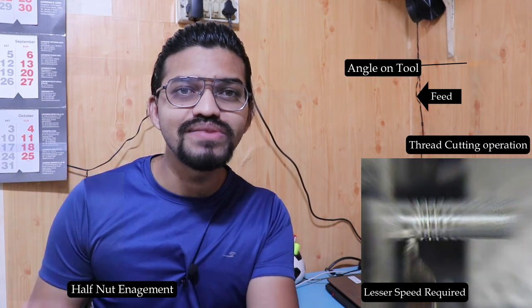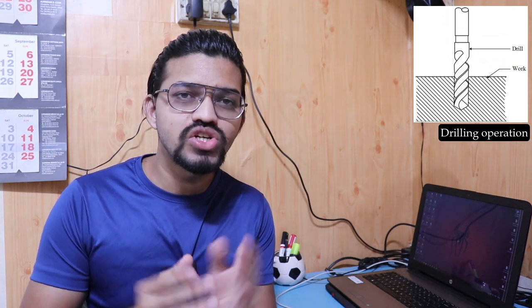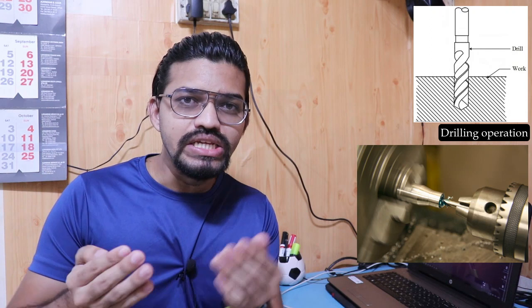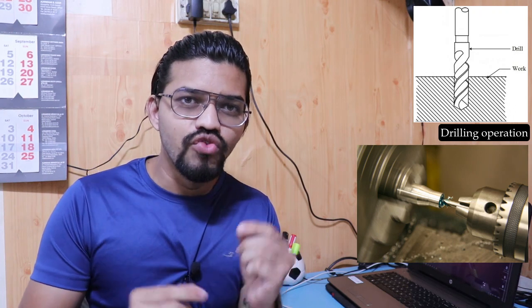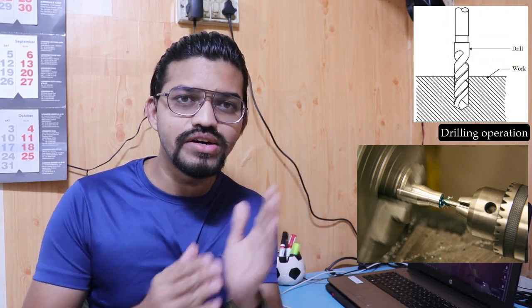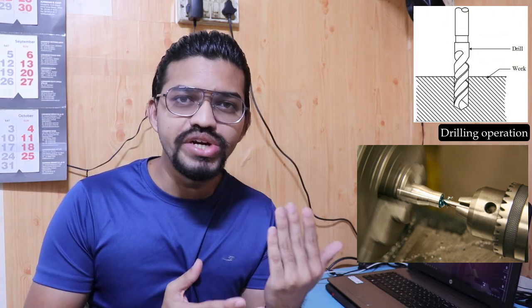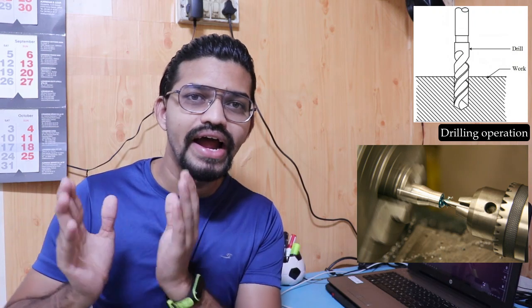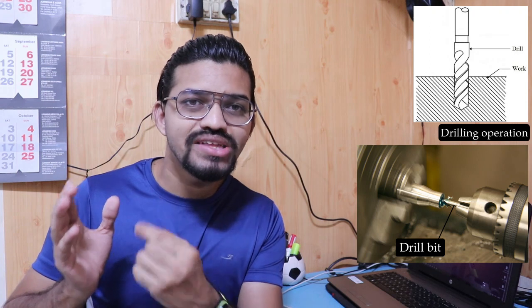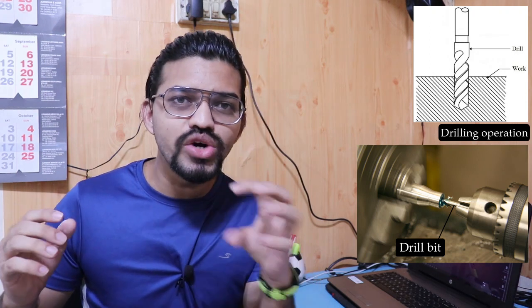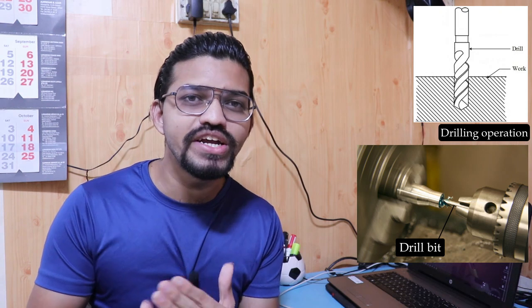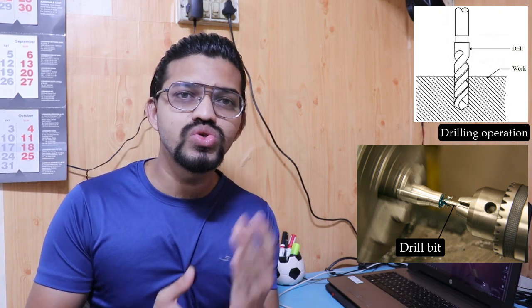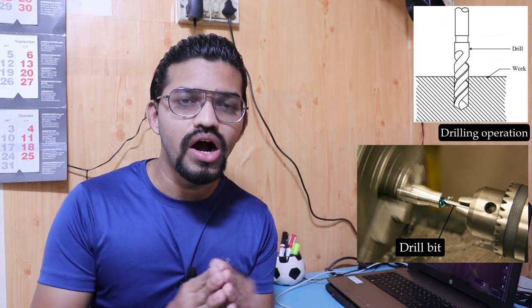The drilling operation on the lathe involves a drill bit — a multi-point cutting tool — being fed against the rotating workpiece. The workpiece is held in the chuck and rotates, while the drill bit is held in the tailstock using a live center and pressed against the rotating workpiece so that material is removed in the form of chips, producing holes of the desired diameter.